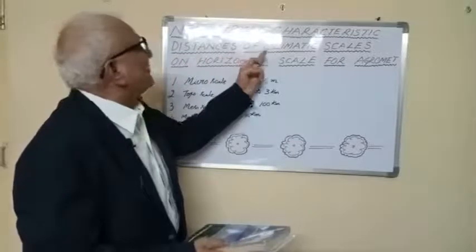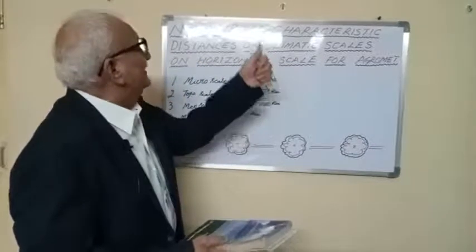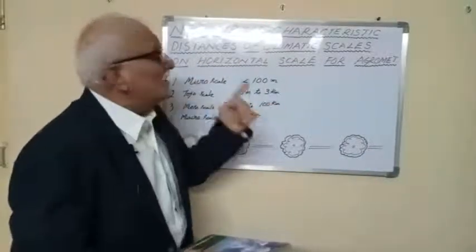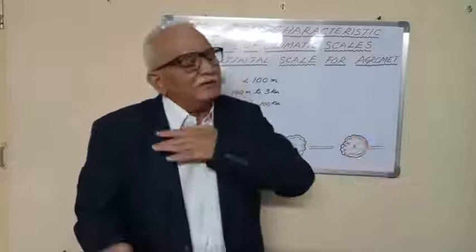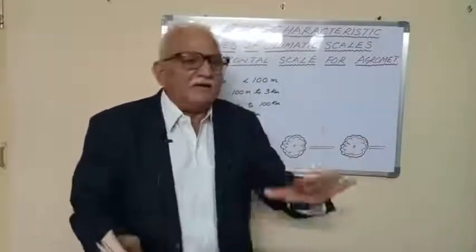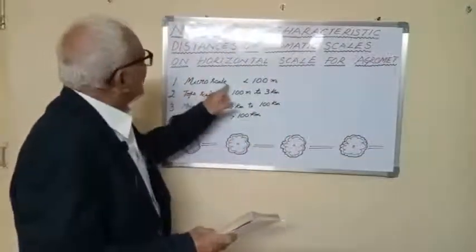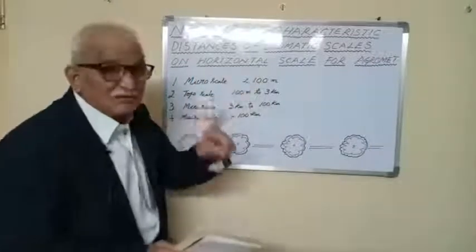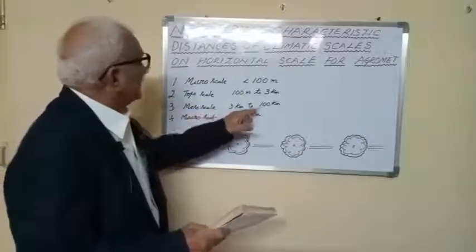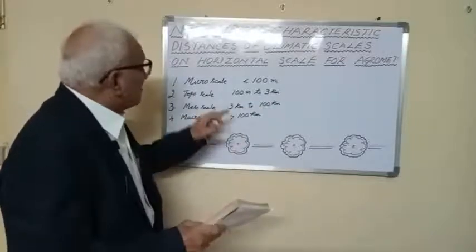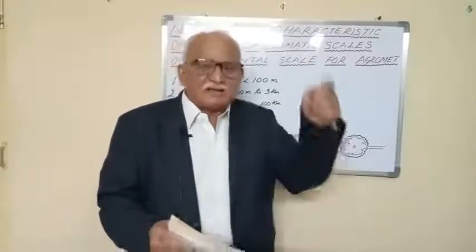We defined typical distances of characteristic scales on the horizontal scale for agro-meteorology. Micro scale: less than 100 meters. Topo scale: 100 meters to 3 kilometers. Meso scale: 3 kilometers to 100 kilometers. Macro scale: more than 100 kilometers. This is the horizontal scale on which we, the agro-meteorologists, shall work — as approved by the highest body of WMO.